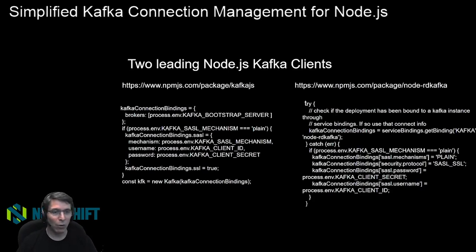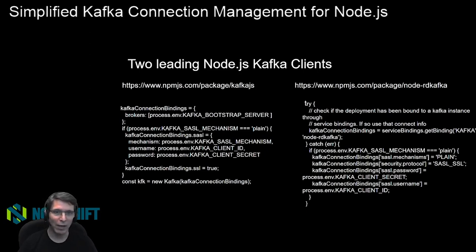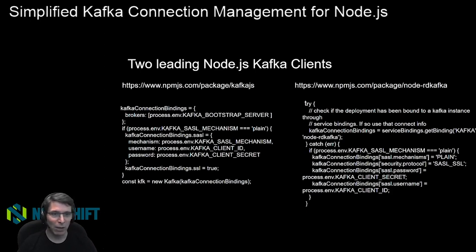For Node, there are two leading Kafka clients, and unlike some other languages, each of the packages has its own APIs and its own way of connecting. I have two examples of code to connect with Kafka.js and NodeRD Kafka. I've used the same environment variables, but the way you pass them to the client actually ends up being different.